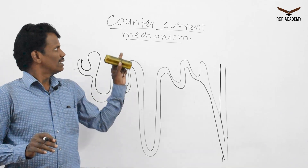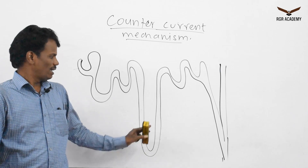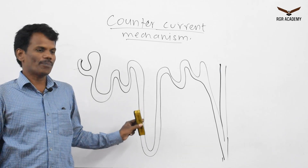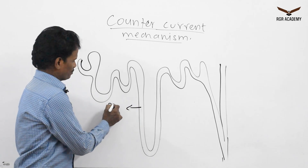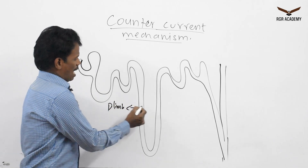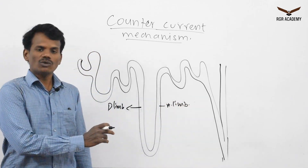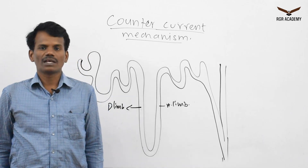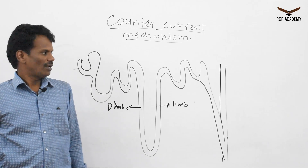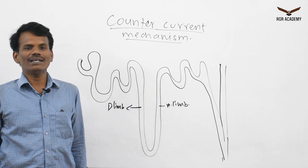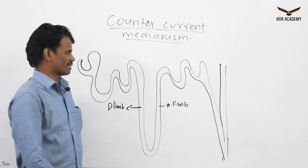In the nephron, this counter current mechanism is occurring at the Henle's loop. Henle's loop consists of a descending limb and ascending limb. Around this Henle's loop, there is another important structure — a blood vessel forming a loop-like structure, which we call the vasa recta.